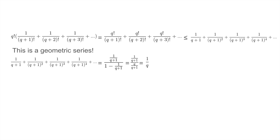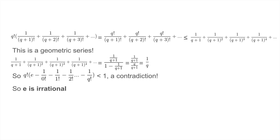But this implies that our sum is less than 1, which contradicts that it is a whole number. So we have reached a contradiction, and therefore e must be an irrational number. Thanks for watching.